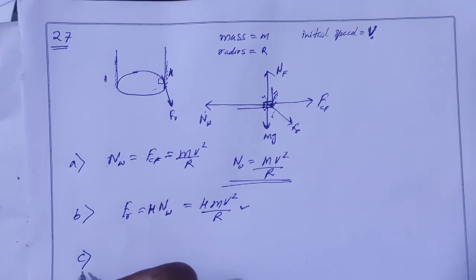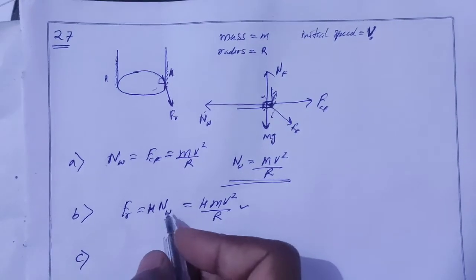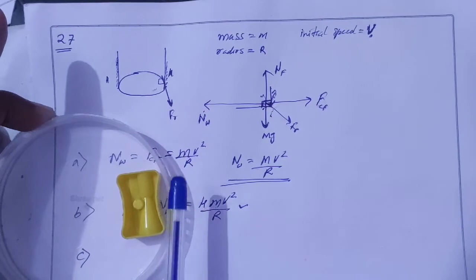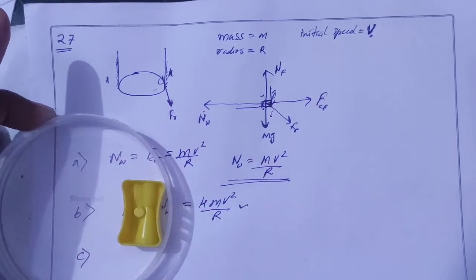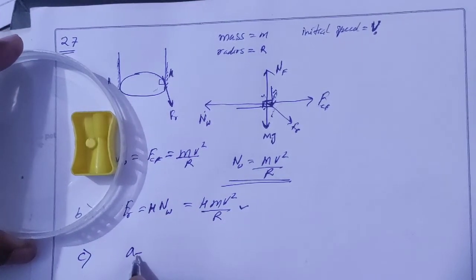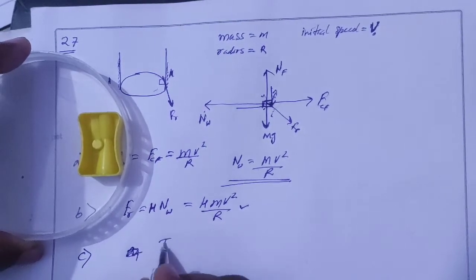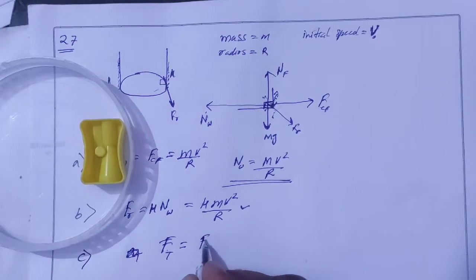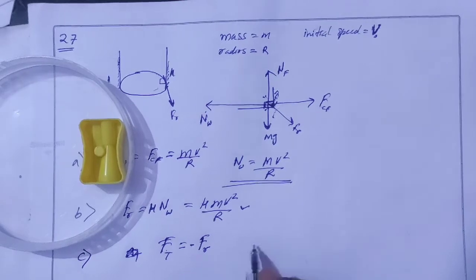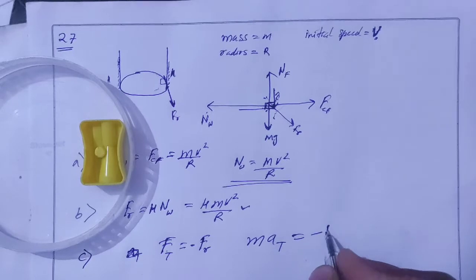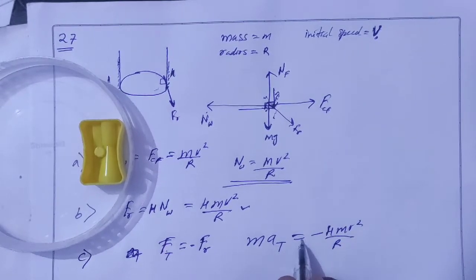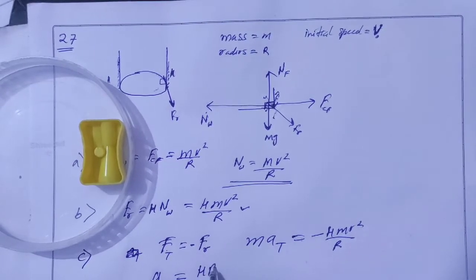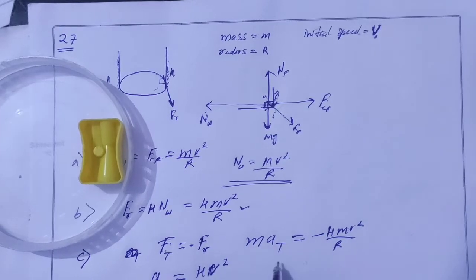Part C: what is the tangential acceleration of the block? The radial acceleration is centripetal acceleration, and here is the tangential acceleration — it is a retardation. Friction acts backward opposing the motion. So the tangential force equals the friction force, which is negative. M times tangential acceleration equals negative of friction force: −mu·mv²/r. Therefore, tangential acceleration at = −mu·v²/r.